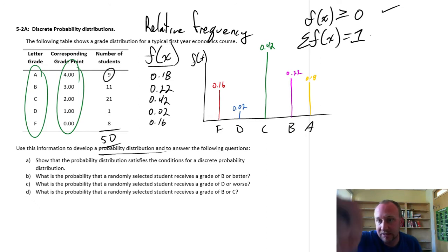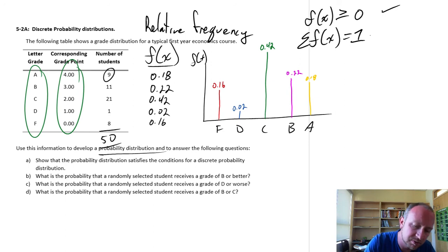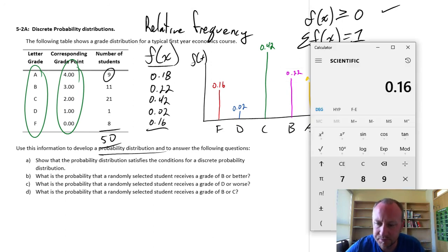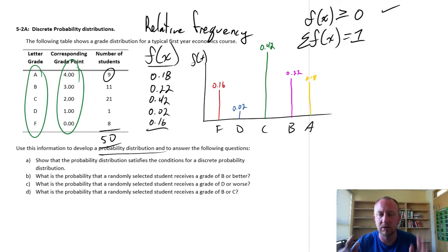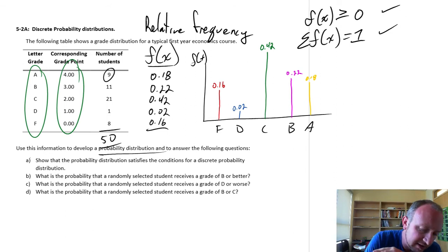The other condition for a discrete probability distribution is that the sum of all of those probabilities is equal to 1. So, in other words, if I randomly select, in this case, one of these students, there's a 100% chance that that student receives one of these grades. Right? So, if we added up all of these probabilities, we'll start at the bottom. I've already got 0.16 in, plus 0.02, plus 0.42, plus 0.22, plus 0.18, equals 1. Everything checks out. So, we meet our two criteria for this discrete probability distribution. So, yes, we have met those conditions.